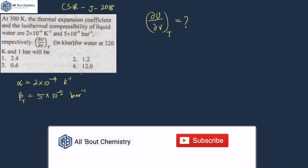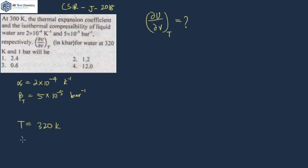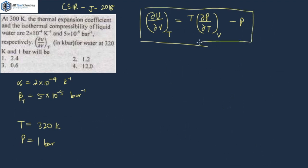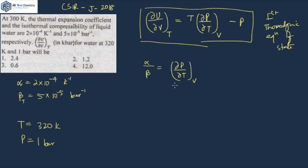This particular term comes from the first thermodynamic equation of state. They are asking everything when the temperature is 320 Kelvin and the pressure is 1 bar. From the first thermodynamic equation of state, this is the value we have to calculate. Temperature is given, pressure is given. Now, del P by del T at constant V — we just derived that alpha upon beta equals del P by del T at constant V. Once you know all these things, the question is pretty simple and will just take 10 seconds to solve.